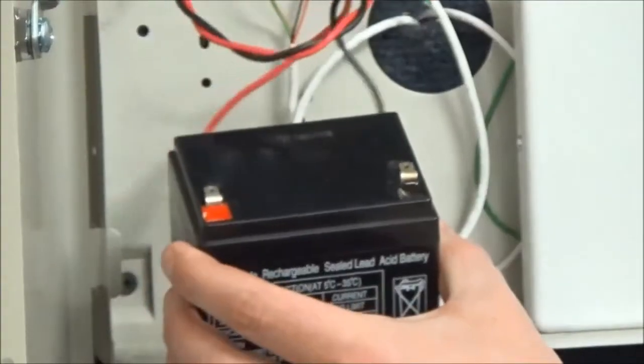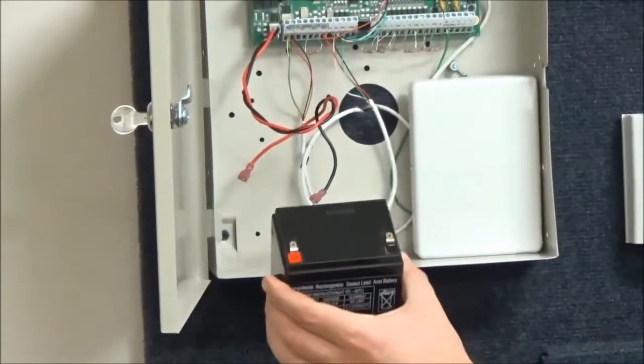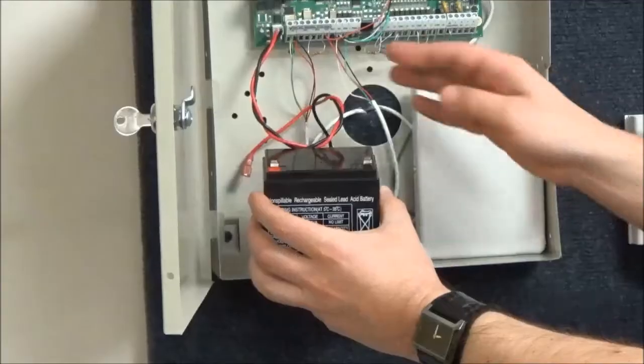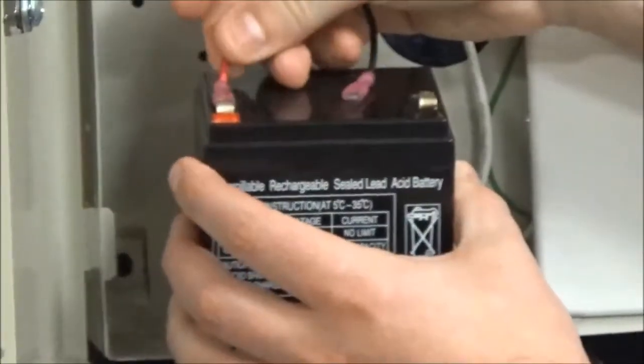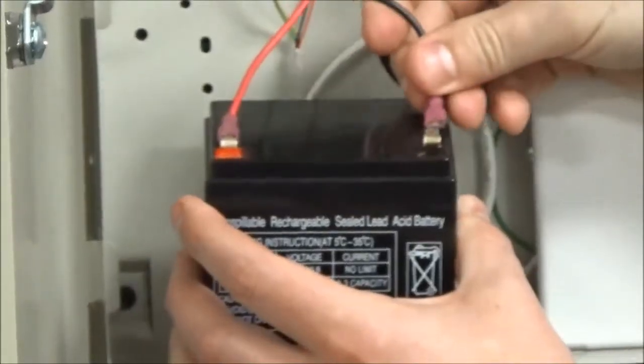Remove the battery from the panel box, place the new battery on the shelf, and attach the new battery. Red to red and black to black.